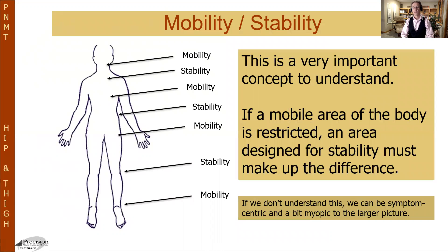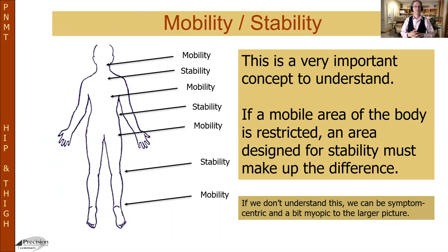One concept that I think is very important from the beginning, especially when we look at the hip, is this idea of mobility and stability. When you look at the body, your ankles are incredibly mobile. Your knee — kind of fore and aft — that's what the motion capacity is. Your hips are incredibly mobile.